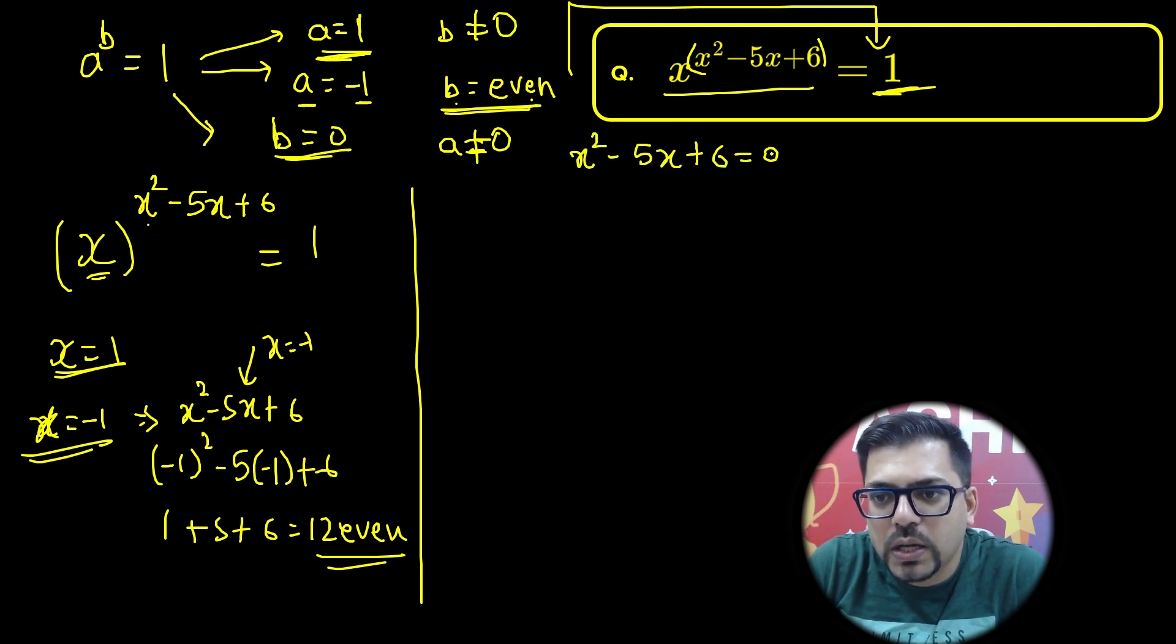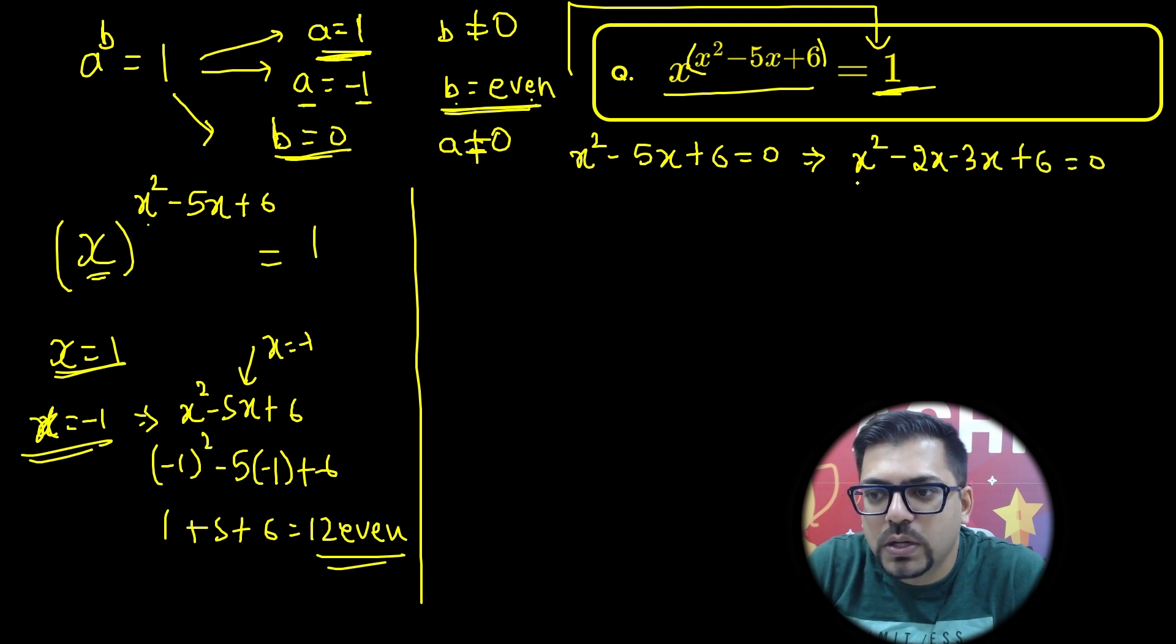So the exponent is x squared minus 5x plus 6 equals 0. Now if you solve this, you will apply middle term splitting. You can write x squared minus 5x as minus 2x minus 3x and then plus 6 equals 0. Take x common from here, and from these two terms take minus 3 as common, so you'll get x times x minus 2.